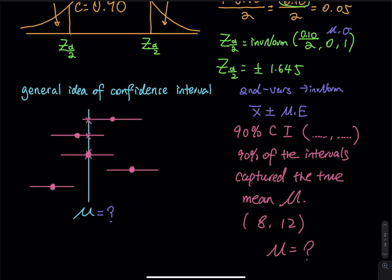Hopefully you understand everything I said in this video. If you get everything, you can easily learn the rest of the confidence interval in this lesson. In the next video, I will show you how to compute confidence interval using your TI graphing calculator. If you think my lesson is helpful, let me know in the comment section below. Like the video, subscribe to my channel, share the video. I appreciate your help — I'll see you all in the next lesson. Signing out for now.